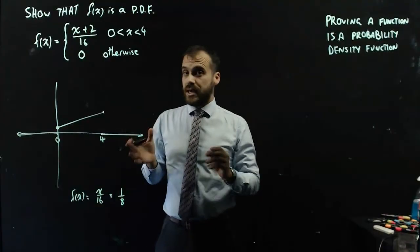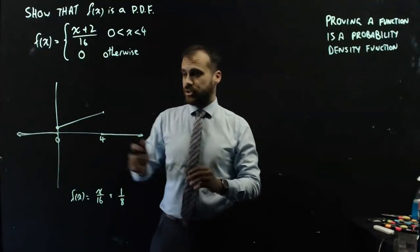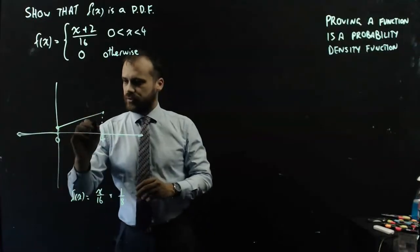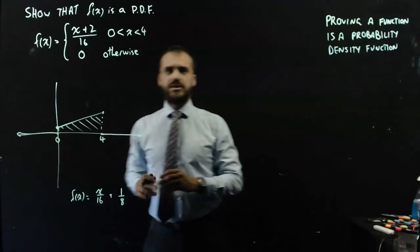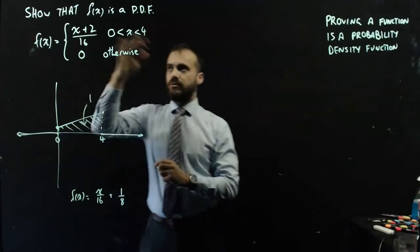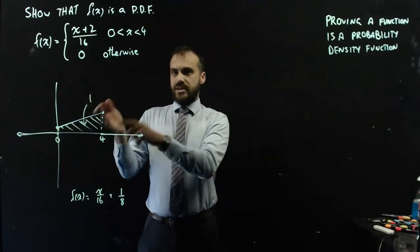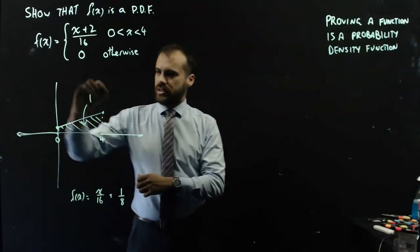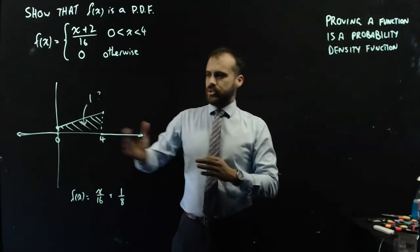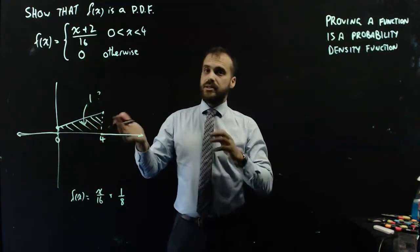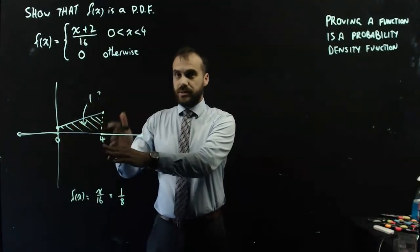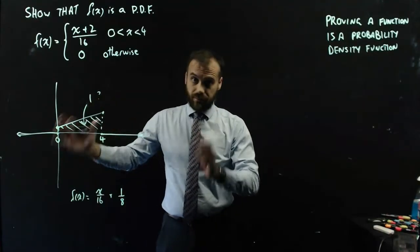Now, for something to be a probability density function, the area underneath the probability density function has to be equal to 1. And so the question we're really asking here is, is the area underneath the probability density function 1? It must be 1, because the probability of something happening is 1, and the probability density function tells us the probability of something happening.